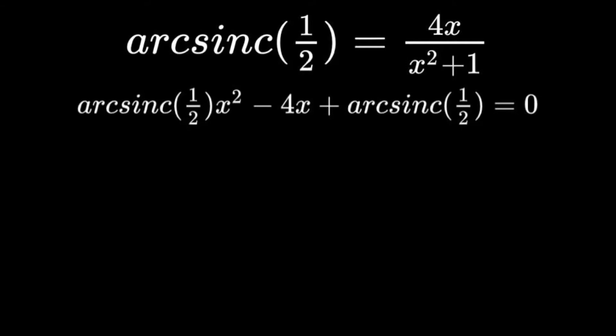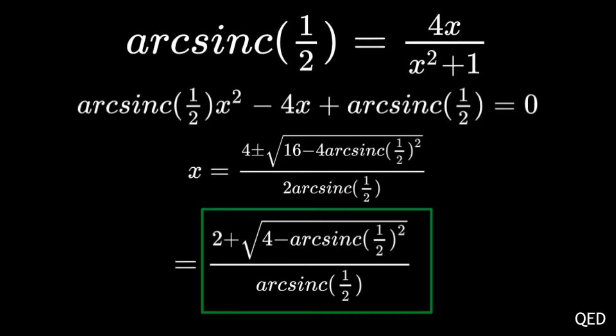This is a quadratic, which can be solved using the quadratic formula, which yields x equals 4 plus or minus the square root of 16 minus 4 arcsinc of 1 half squared all over 2 times arcsinc of 1 half. Disregarding the minus solution and simplifying gives us our final answer of x equals 2 plus the square root of 4 minus arcsinc of 1 half squared all over arcsinc of 1 half.